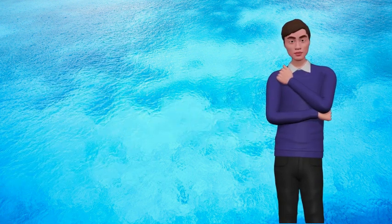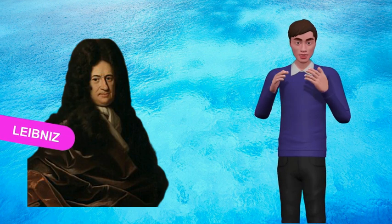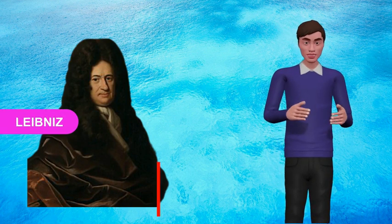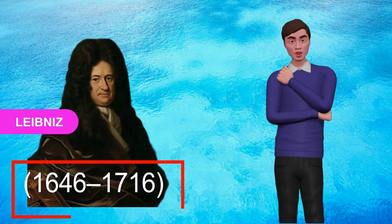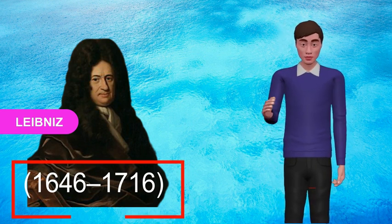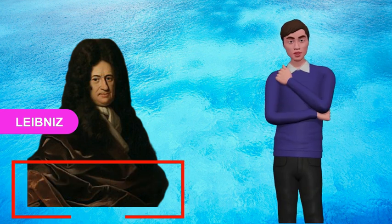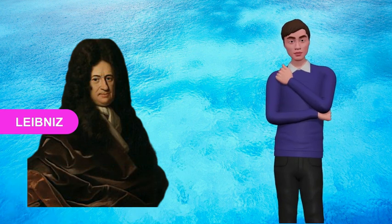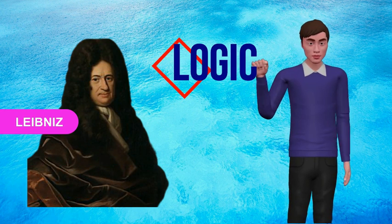2. Leibniz. Gottfried Wilhelm Leibniz, 1646-1716, was one of the great thinkers of the 17th and 18th centuries and is known as the last universal genius. He first argued that mathematics is essentially logic. By the way, logic is a science of reasoning.